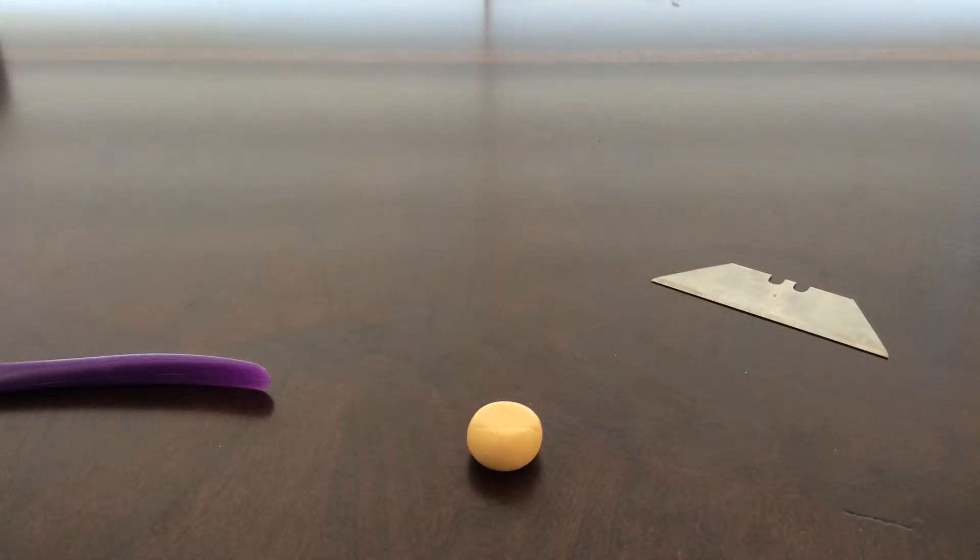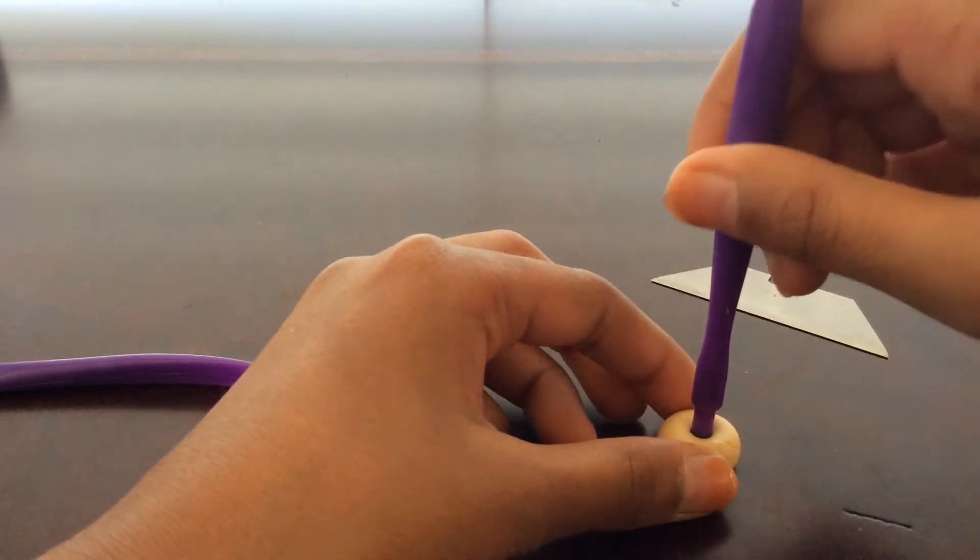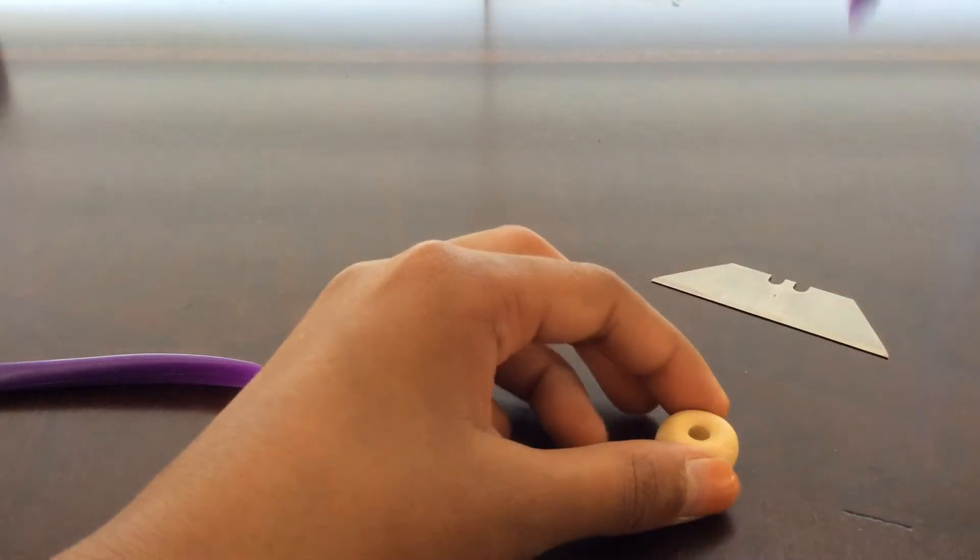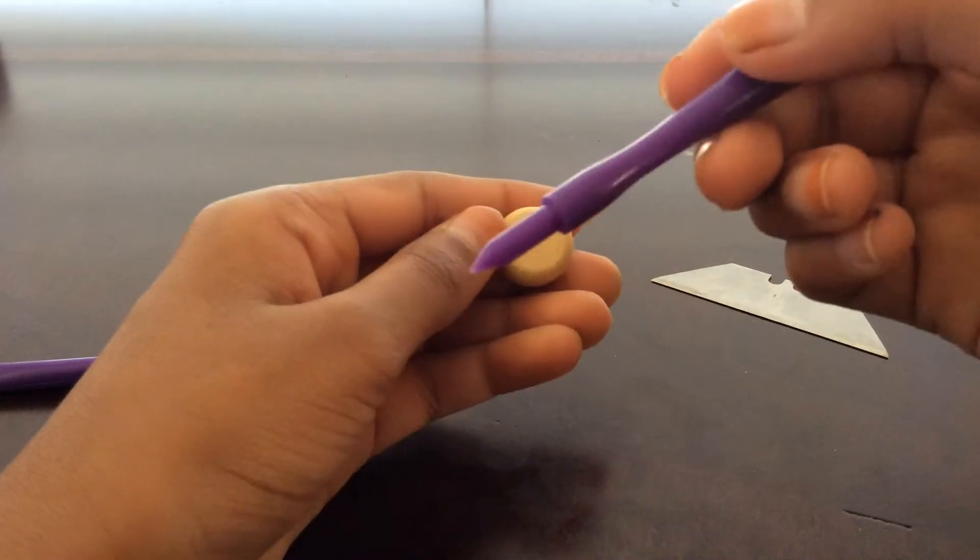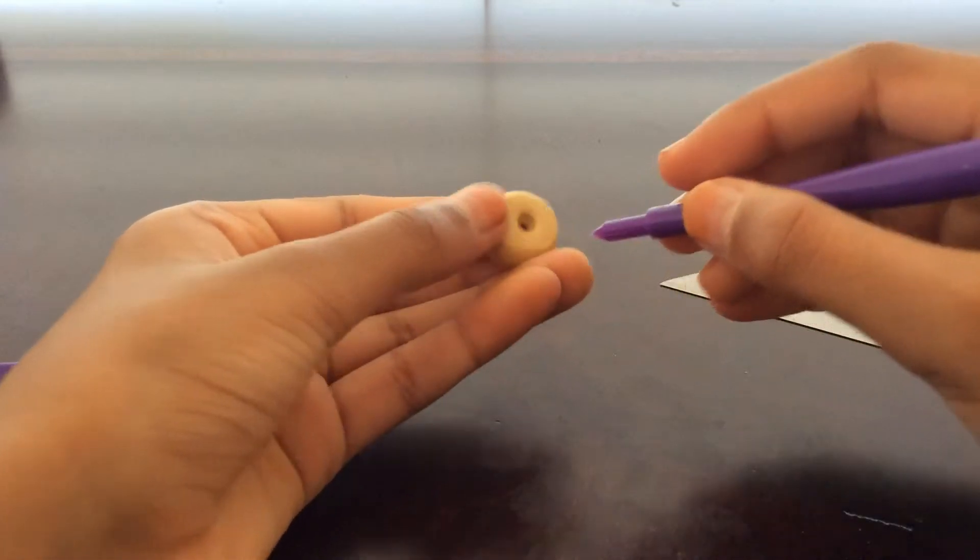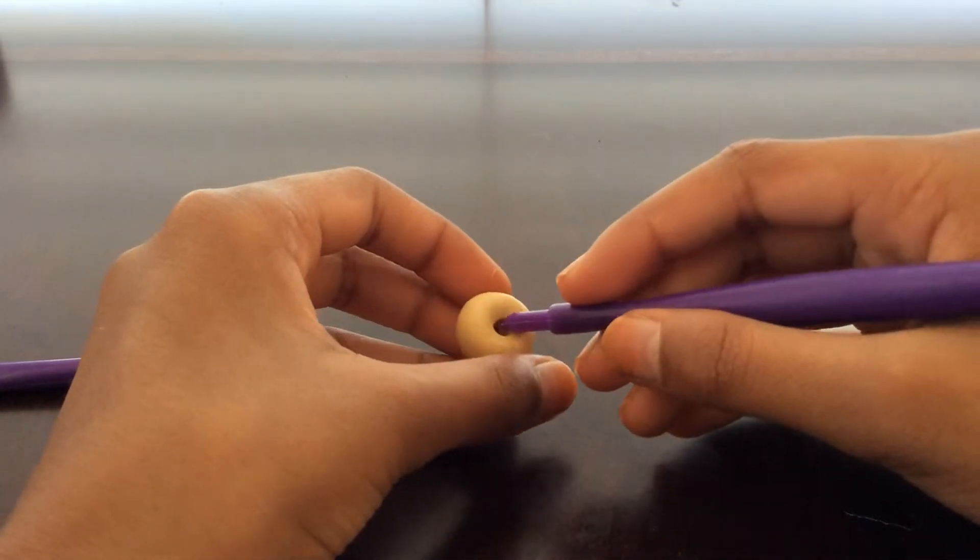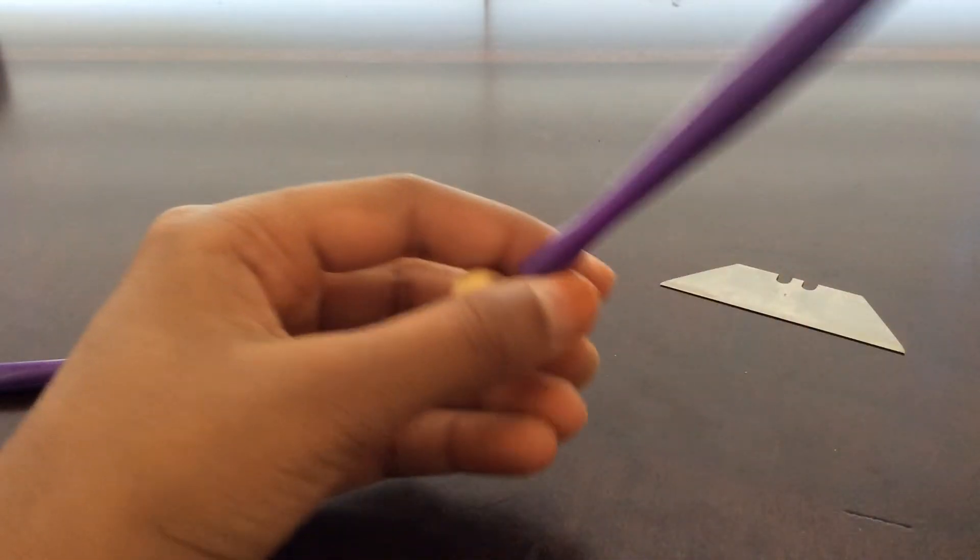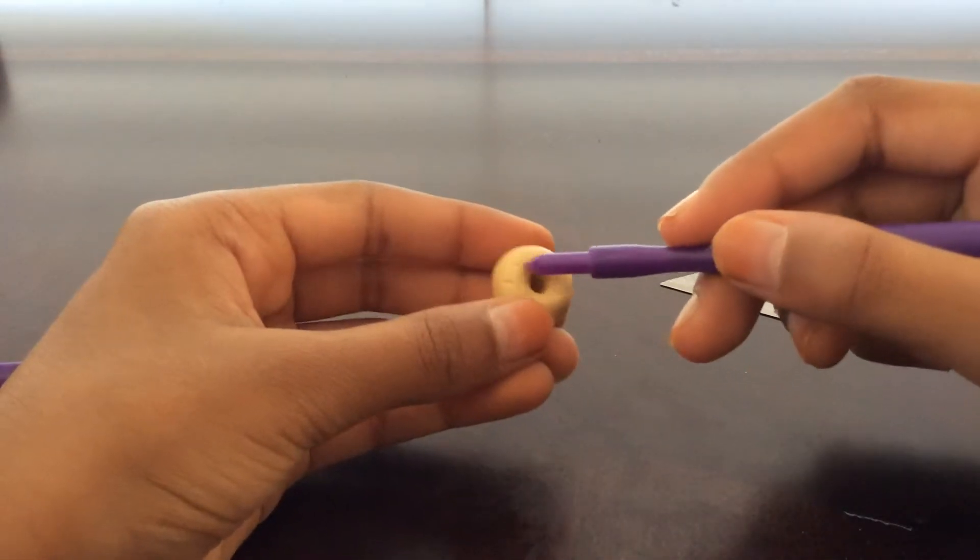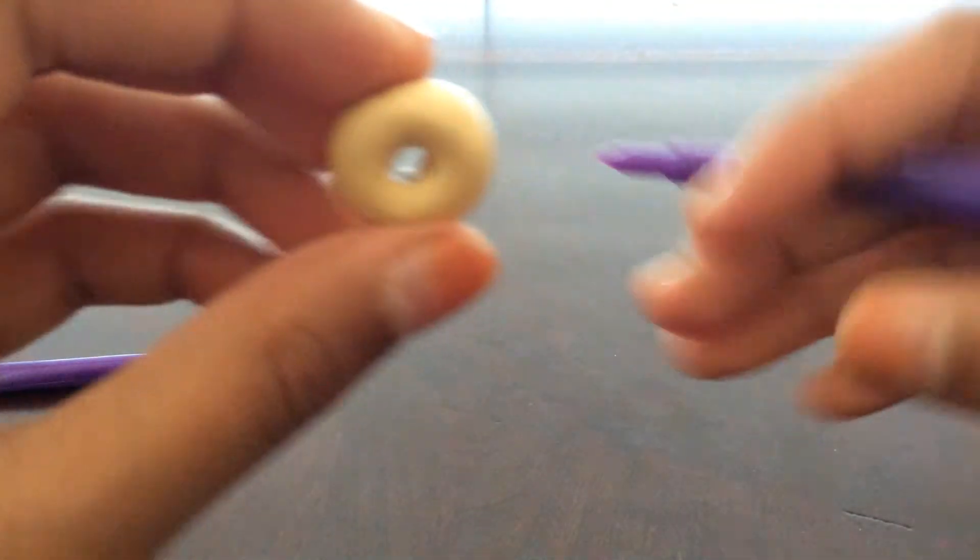And then you're going to take this needle tool and poke a hole right in the middle. I like using this clay blade or a dotting tool. Just poke a hole right in the middle. So it should look something like this when you're done.